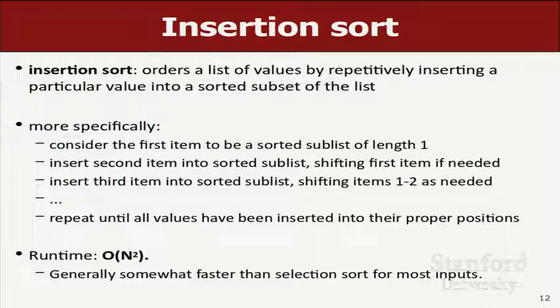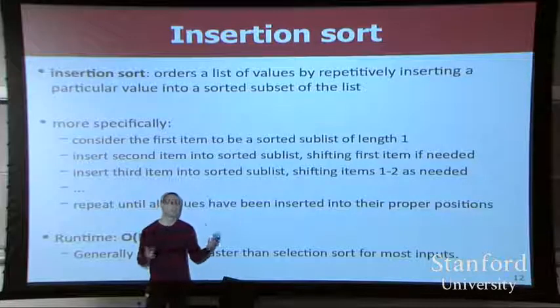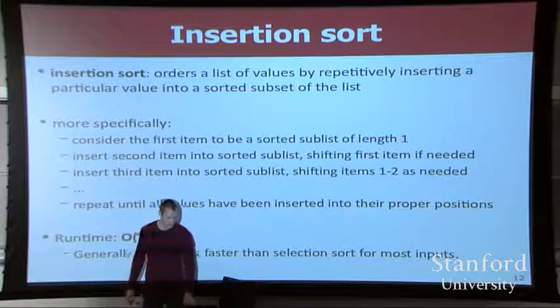Now, is that better or worse than selection sort? I think it's a good question. I could code it, I could run it, we could time it, and all of this kind of thing. It turns out to also have an N squared runtime, but typically for various inputs it seems to run a little faster than selection sort. Why is that? Because you end up walking around the array a little bit less, just for most inputs that you would see.